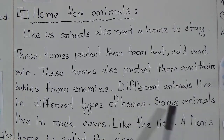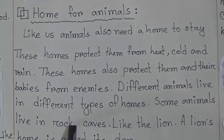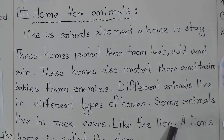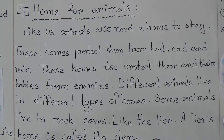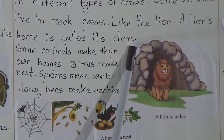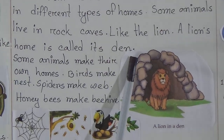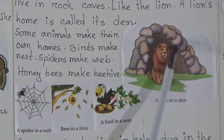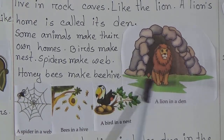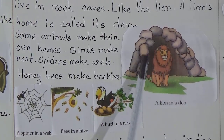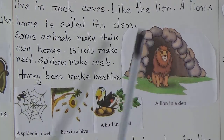Different animals live in different types of homes. Some animals live in rock caves, like the lion. A lion's home is called its den. Look, this is the picture of the lion's home — it's called a den.